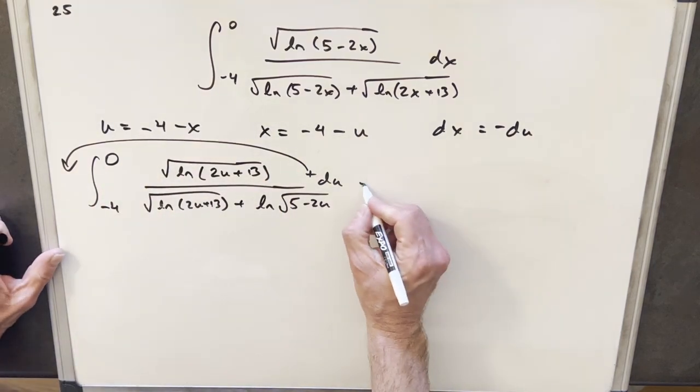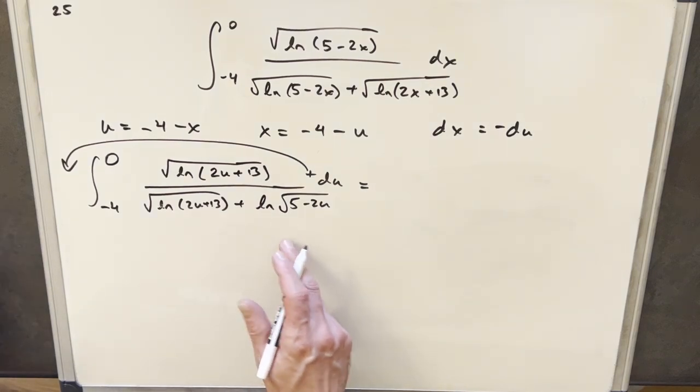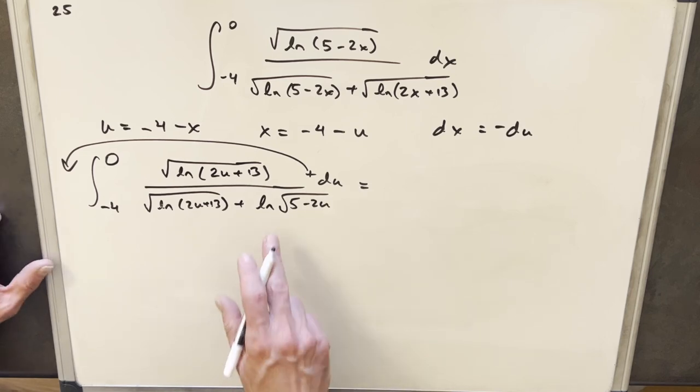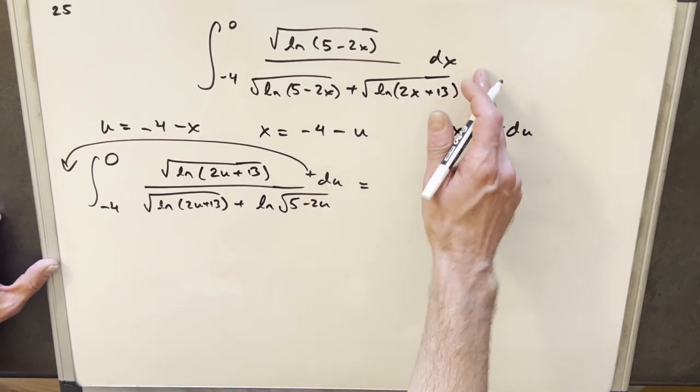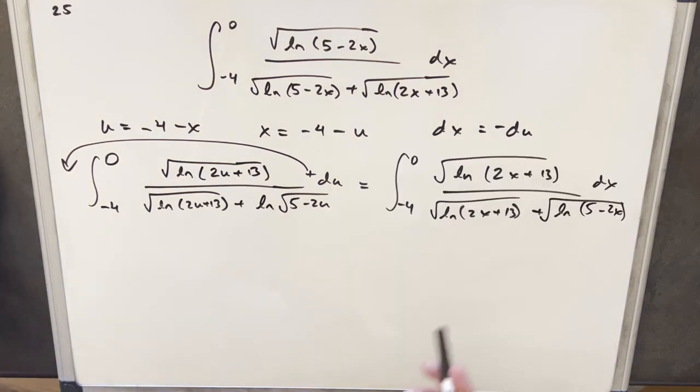And the reason I like that is because it's exactly what we had in the beginning. And then for the next step, what I'm going to do is we're just going to do a variable change. Because it's a definite integral, the variable doesn't matter. Okay, so I'm just going to switch it back to x. What I'm trying to do is I'm trying to get it to look like what we had originally.